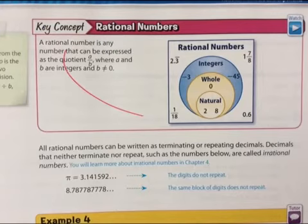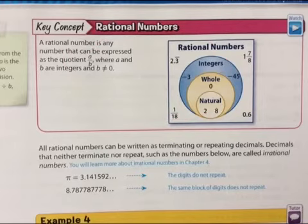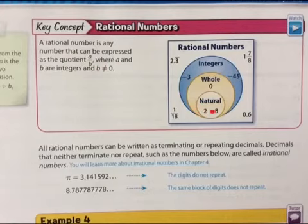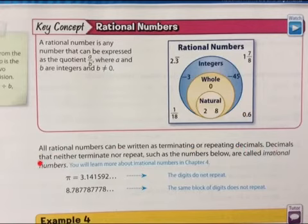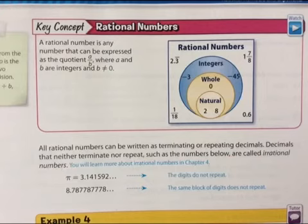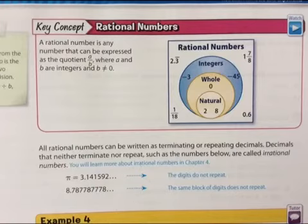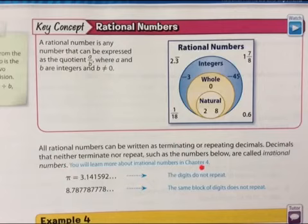Now let's look at another key concept. Rational numbers are any number expressible as A/B where B cannot equal 0. That includes natural numbers, whole numbers, integers, and repeating or terminating decimals. All rational numbers can be written as a terminating or repeating decimal. Decimals that neither terminate nor repeat are called irrational numbers. Pi is an irrational number — 3.14159... — there's no pattern. Another example also has no block of digits that repeats. These irrational numbers can be infinite, and we'll look at this further in Chapter 4.